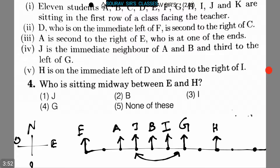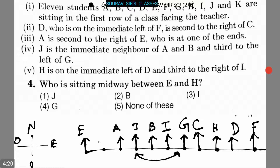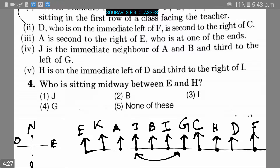It was also given that D, who is on the immediate left of F, is second to the right of C. So let us assume F is here, that means D must be here and C must be here. The remaining student K must be sitting in the last position. This completes the arrangement.